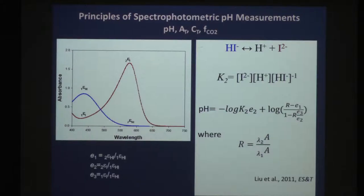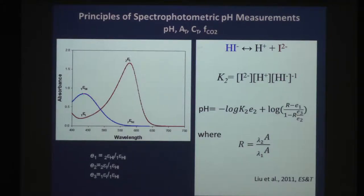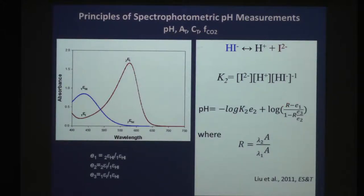When making spectrophotometric pH measurements we have two forms of the indicator. At sufficiently high pH you see one spectrum; at sufficiently low pH you see the other. For intermediate pH values you see a combination. We are looking at the equilibrium between the HI form and the basic I²⁻ form, measured spectrophotometrically. pH — the negative log of hydrogen ion concentration — is given by an expression involving the r-value, which is what the user actually measures.